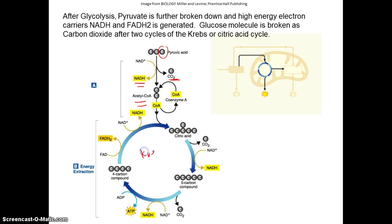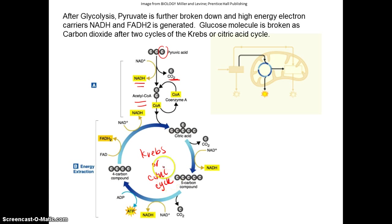A two-carbon molecule is attached to a molecule of coenzyme A, a very reactive molecule, and becomes acetyl-CoA. This two-carbon acetyl-CoA will go into the Krebs cycle, which is also known as the citric acid cycle. Here, a four-carbon molecule combines with this two-carbon molecule to form a six-carbon citric acid.